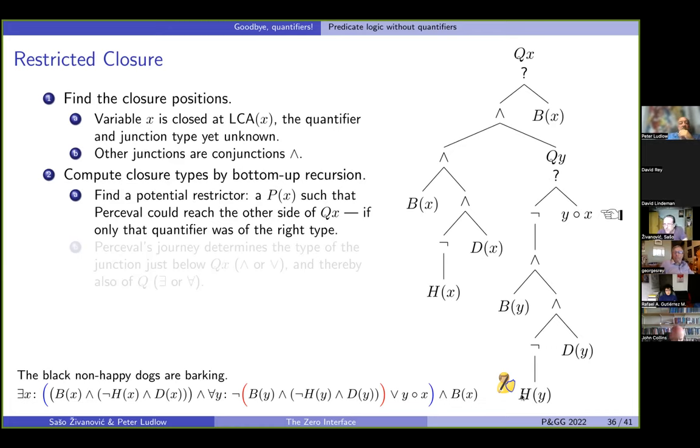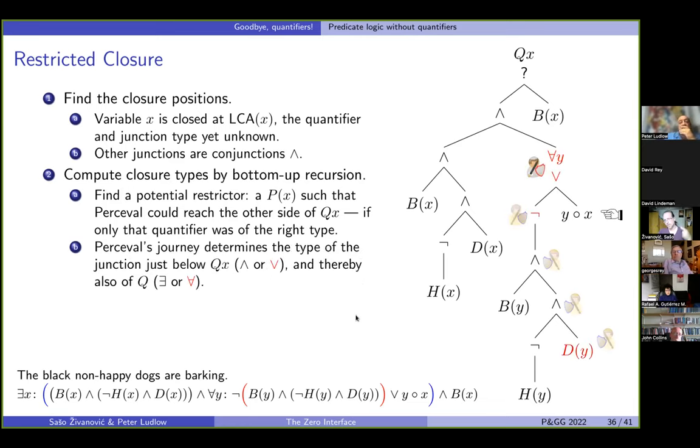So, let's try hy first. We send Percival up. He's transmuted to silver. Oops, cannot continue. Hy is not a potential restrictor. Dy, perhaps? Starting gold. Still golden. Still golden. Transmuted to silver. And now, he will definitely be able to reach the next node, but he will be able to enter into this town only if this is a disjunction because he's wearing a silver armor. So, only if we have universal quantification here. Accidentally, incidentally, if Percival was able to reach the top from some other atomic formula, so if we had two potential restrictors, the math guarantees us that they would always agree on the type of quantification. Done. We do the same for x. Everything is golden here. So, we get the existential quantifier. We are done. This tree corresponds to this formula below. We have reconstructed it, all the quantifiers.